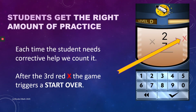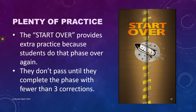The Rocket Math game is designed to give the exact right amount of practice for each student, calibrated to their performance. Whenever a student needs corrective help for a hesitation or an error, we count that with a red X. After the third red X, the game triggers a start over for that phase. A start over means the student has to do that phase again. They do not pass the phase until they can complete it with fewer than three corrections, so they get exactly as much practice as they need to come to mastery on each step.